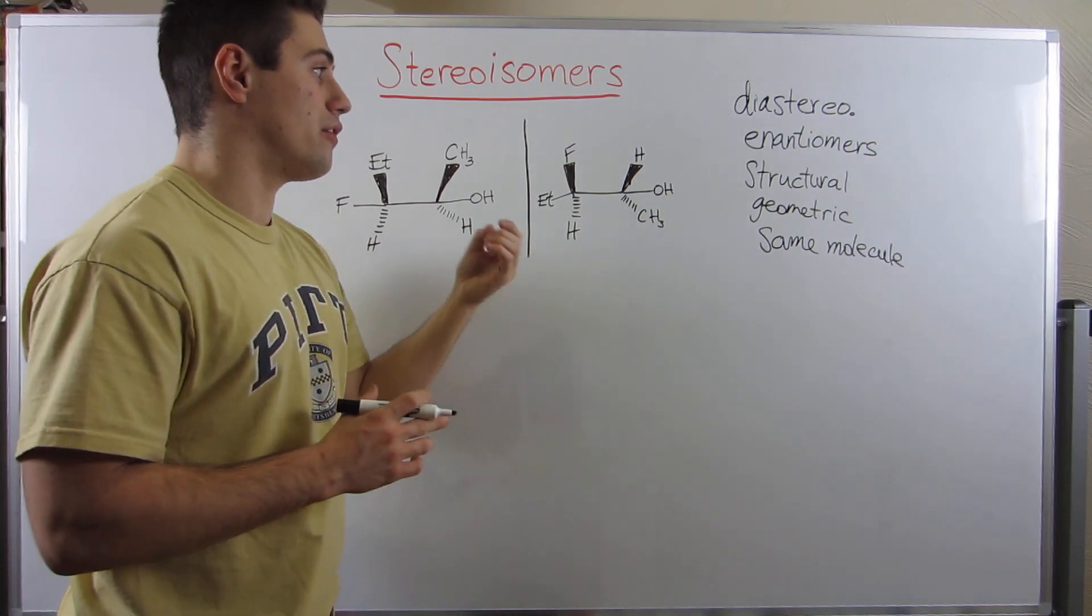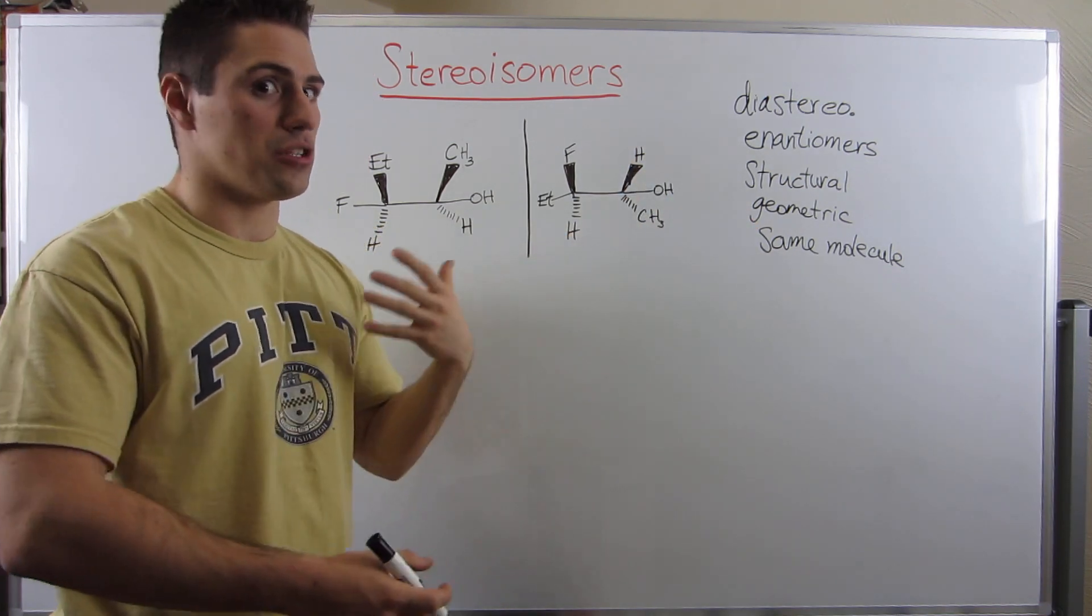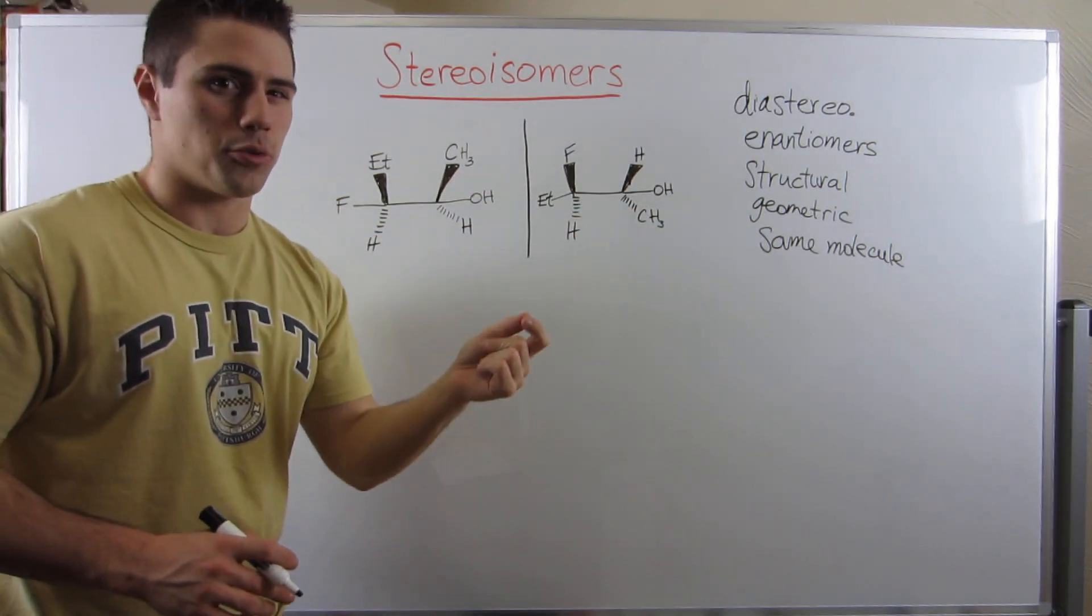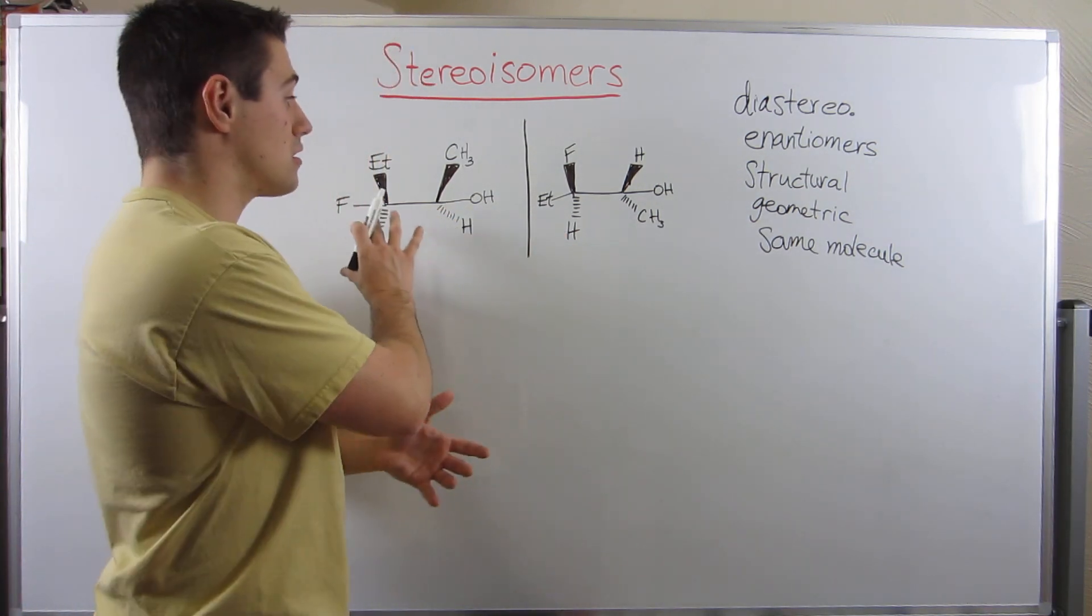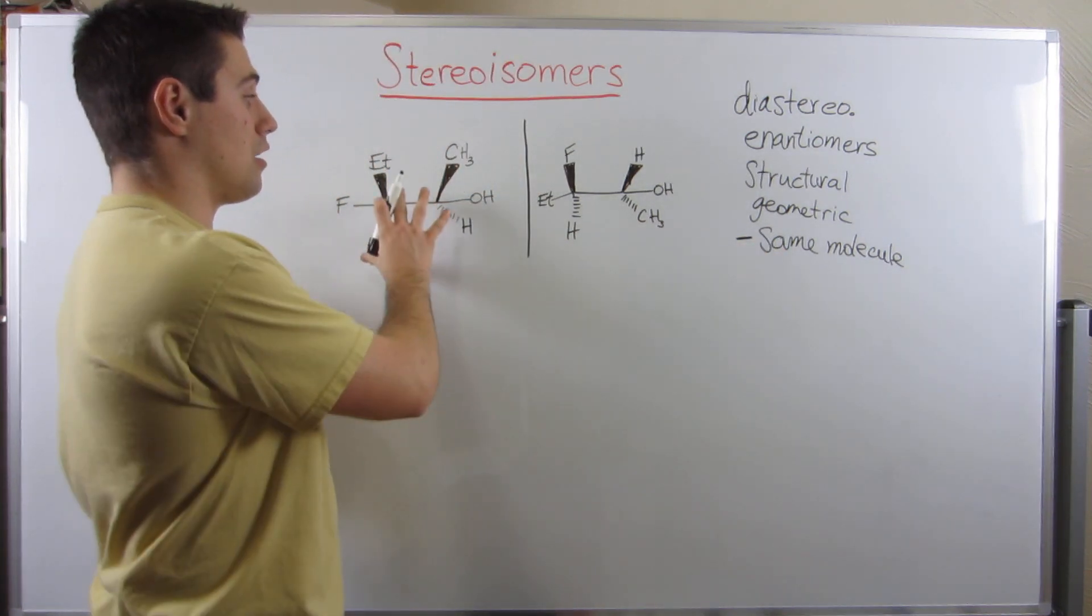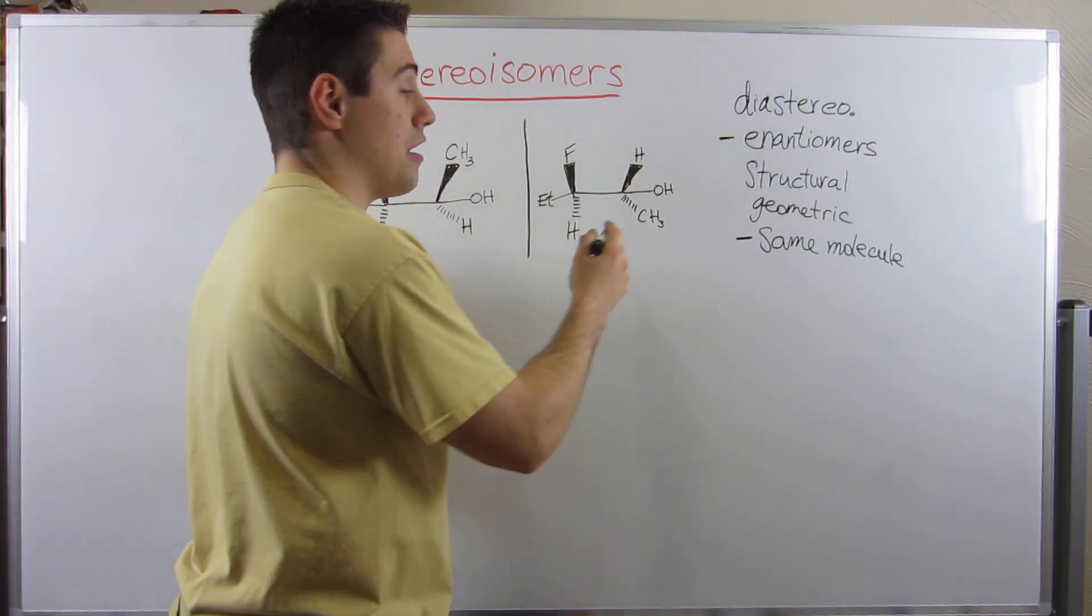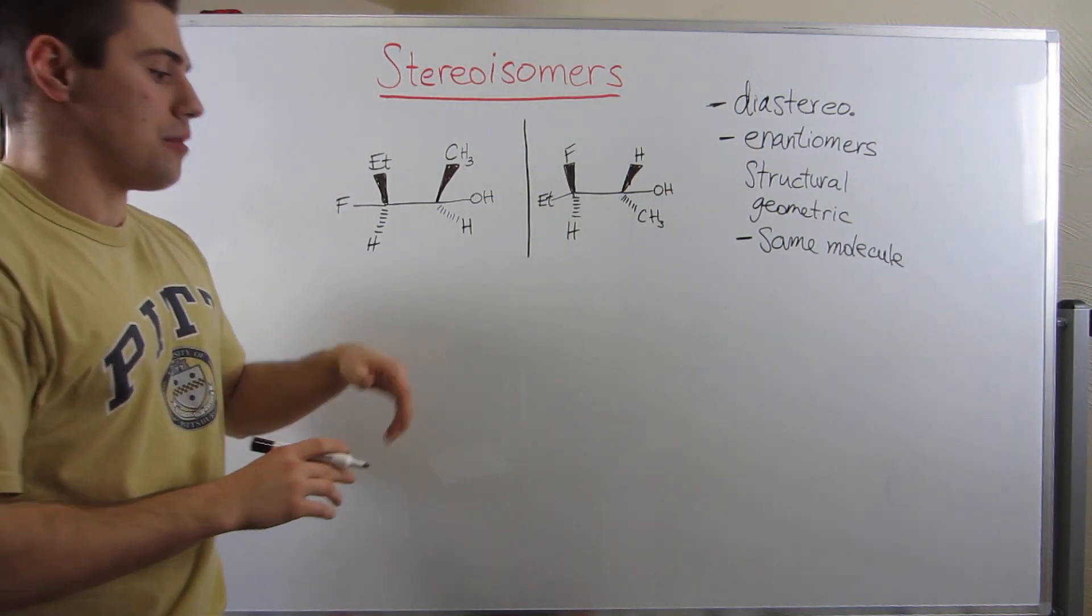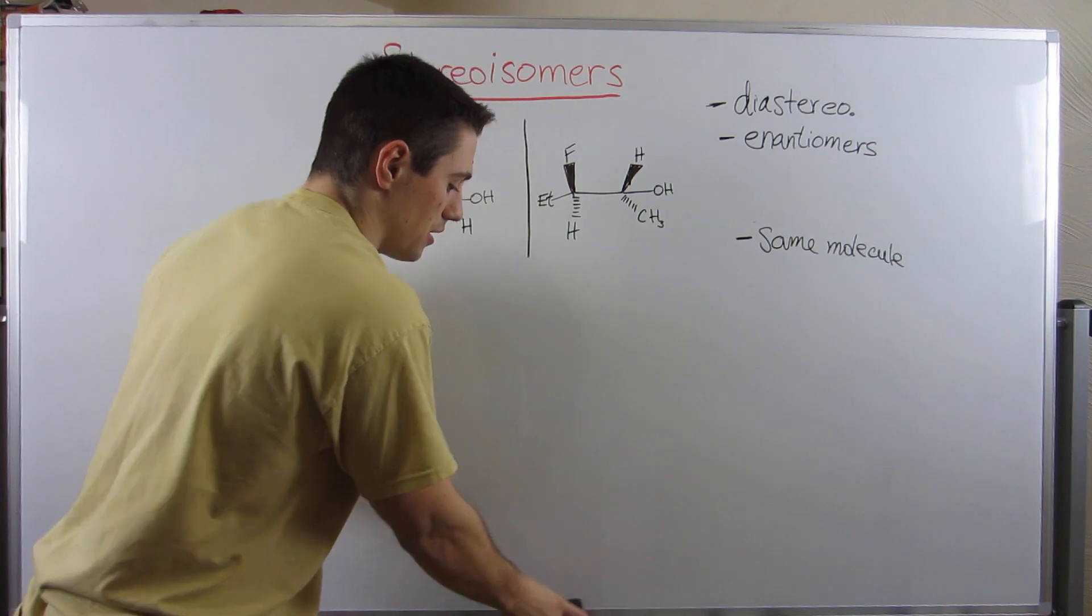You'll either have diastereomers, enantiomers, structural isomers, geometric isomers, or if they're being sneaky, you could actually have the same molecule. No matter what, though, the process always goes that you assign R and S. Here's my checklist: Is there a different type of atom-to-atom connection between the molecules? If there isn't, is there some type of double bond where there would be a geometric isomer? If neither of these check out, then you have to assign R and S and see: are the stereocenter configurations the same? Are they opposite between each other? That would be enantiomers. And if they're just plain different from each other and not opposite, then you would have diastereomers. I'm not going to give you structural or geometric isomers in this video, so we're just focused on these three.